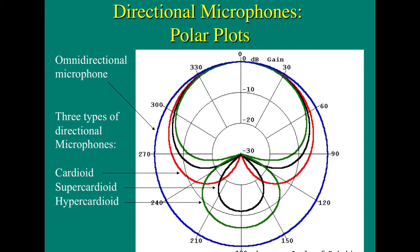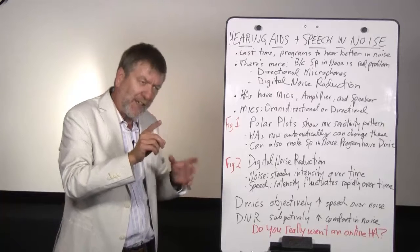And that's what the other squiggly lines in that diagram are showing you. They show the polar plots, or the sensitivity patterns, of various kinds of directional microphones. Interestingly, the one that looks like an upside-down heart is actually called a cardioid directional microphone, as in cardio, the heart, because its pickup pattern is shaped like a heart.